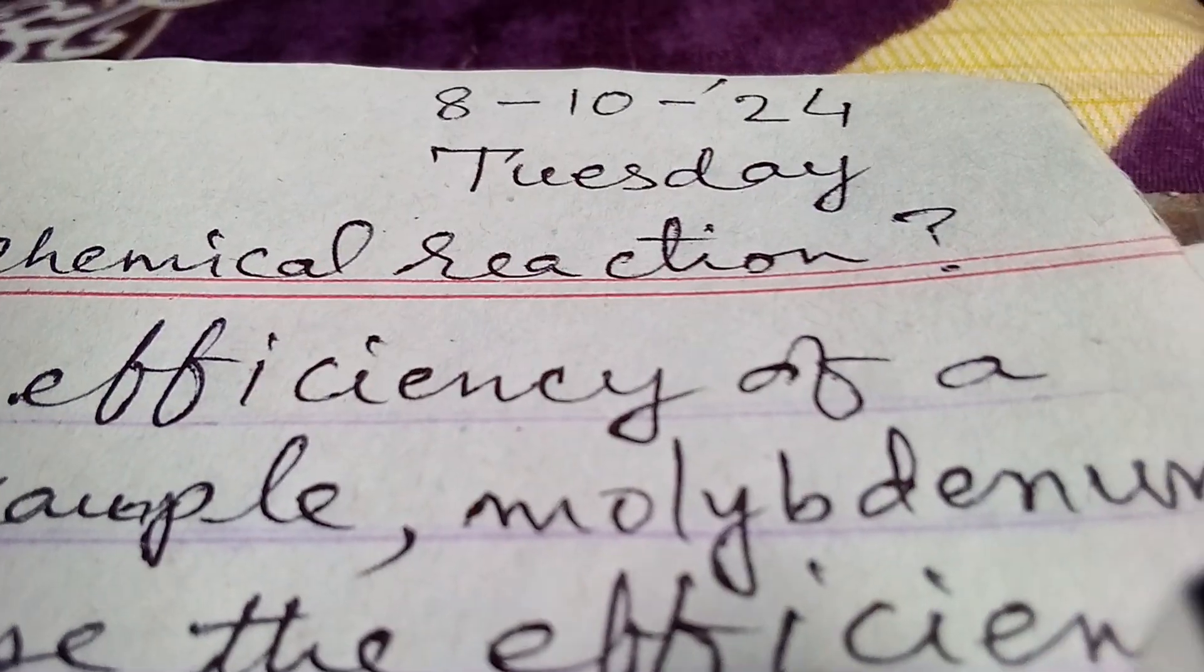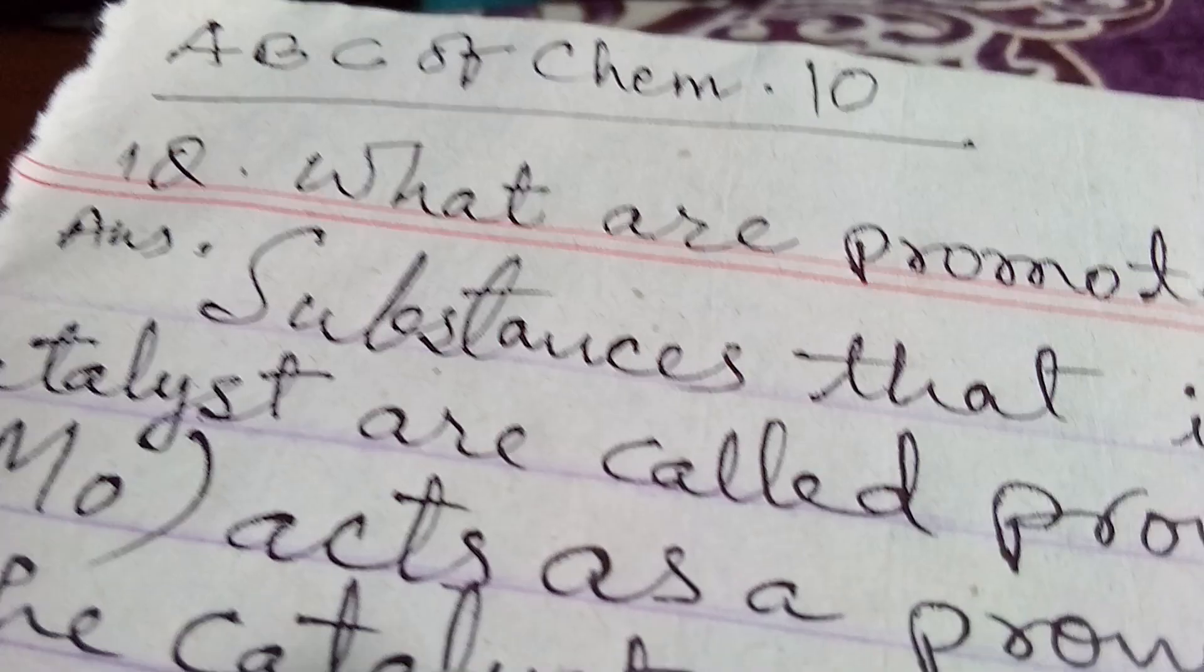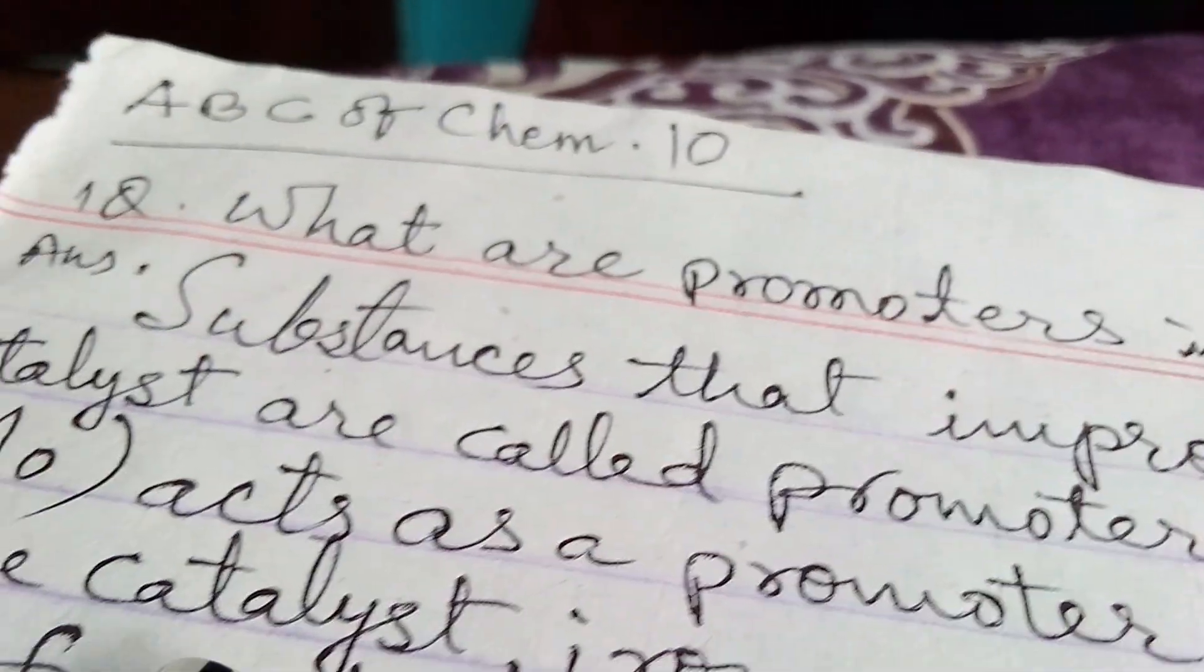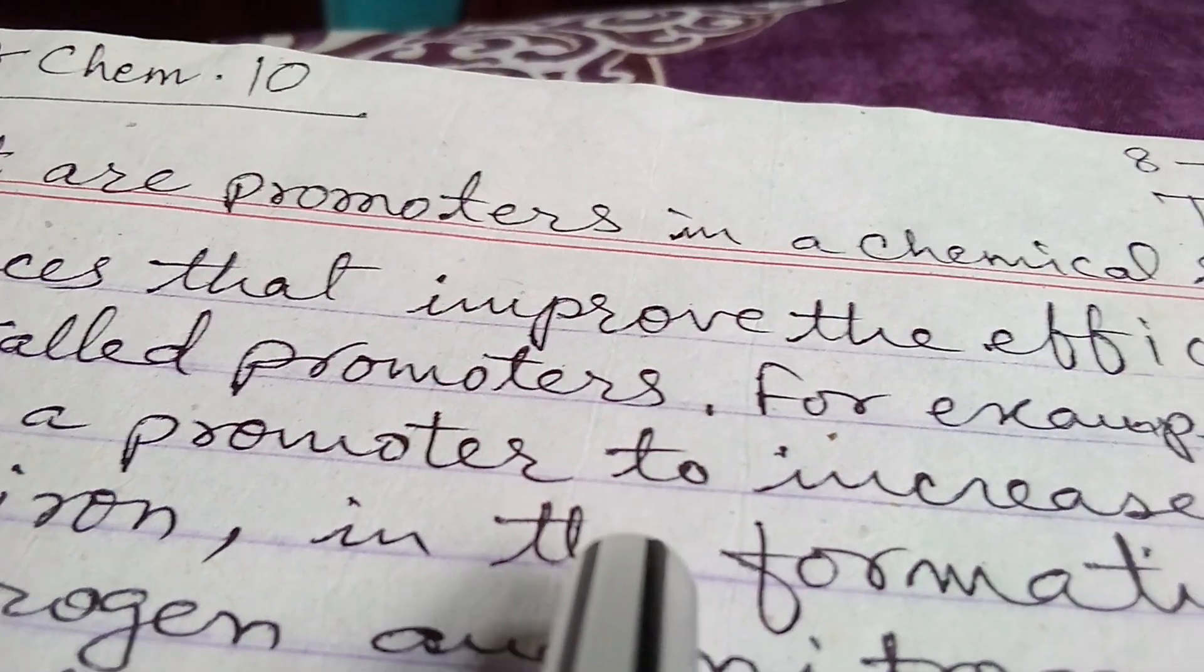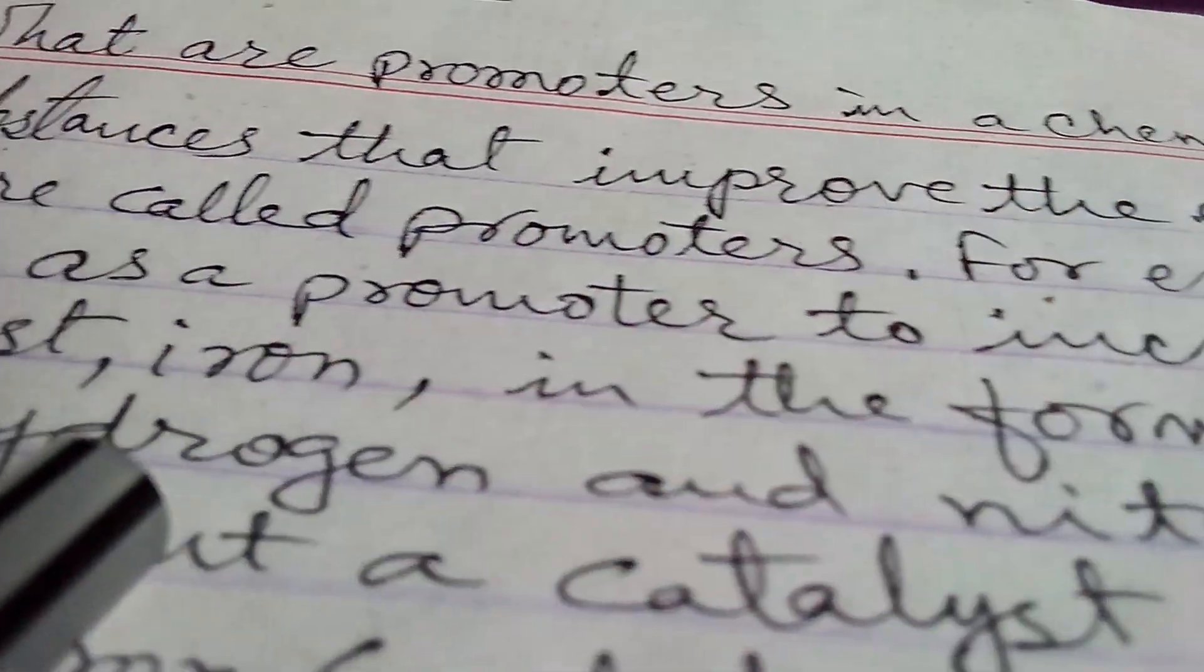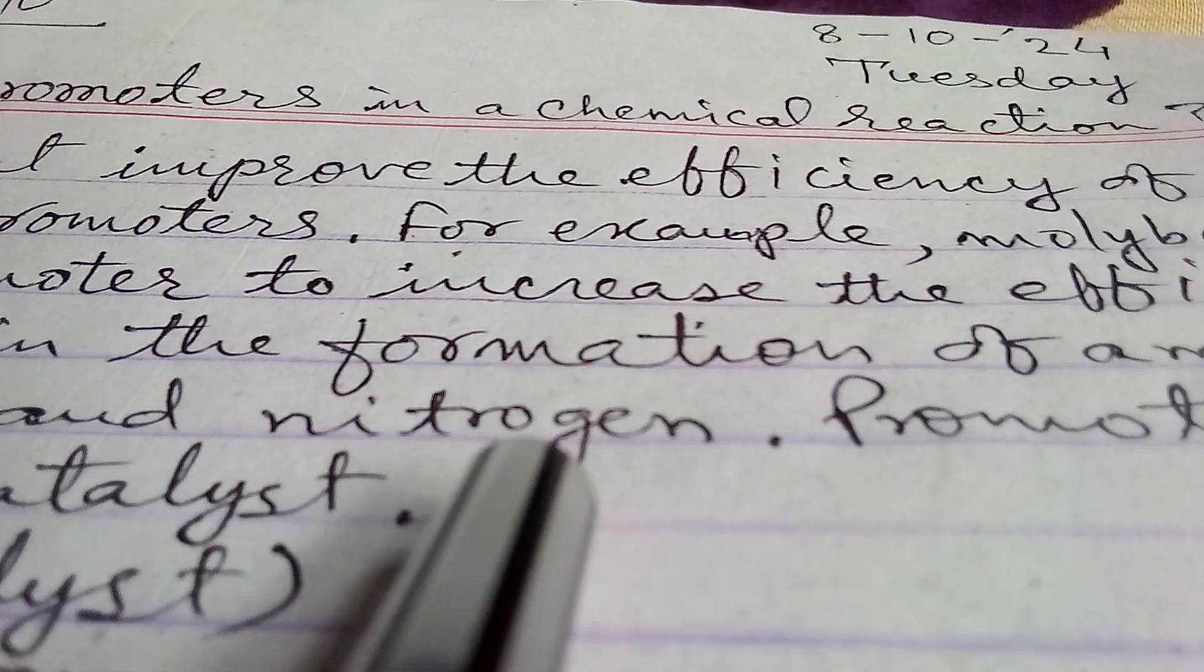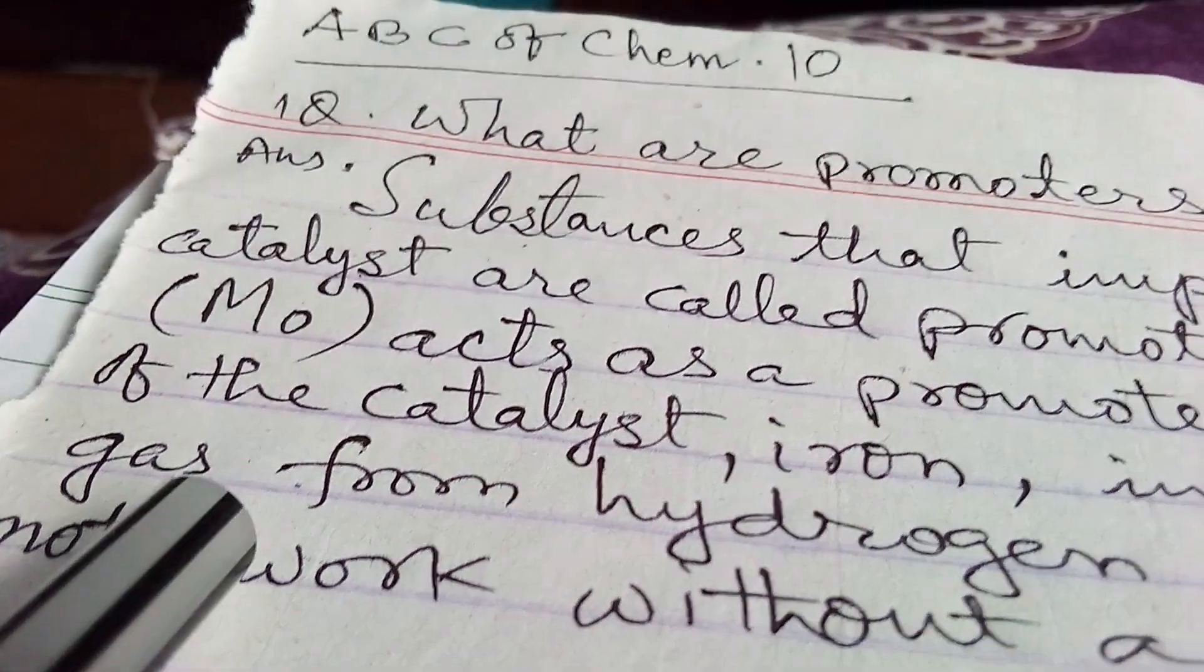of a catalyst are called promoters. For example, molybdenum whose symbol is Mo acts as a promoter to increase the efficiency of the catalyst, that is iron. Here catalyst is iron in the formation of ammonia, that is NH3 gas